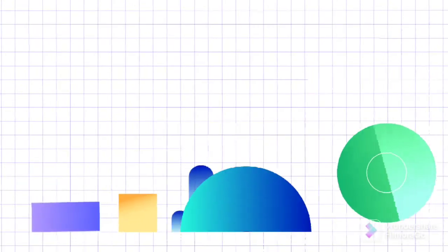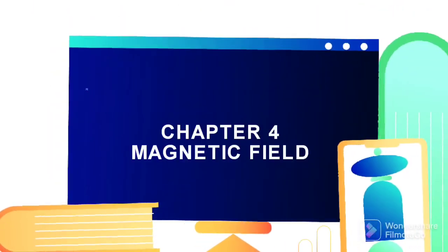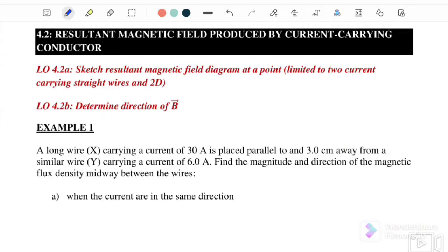Welcome to my channel. Today we will start a new chapter — chapter 4, magnetic field. In this video we will continue with discussing 4.2: resultant magnetic field produced by the current-carrying conductor.